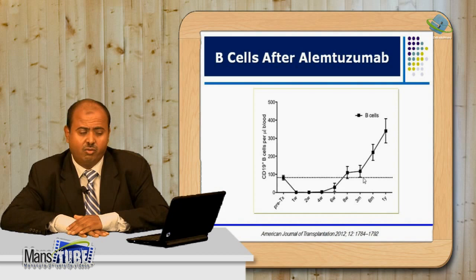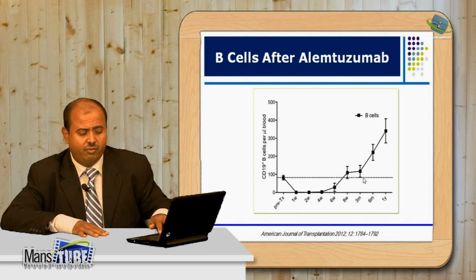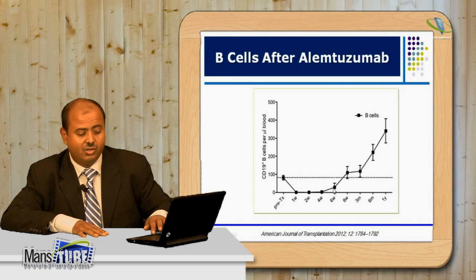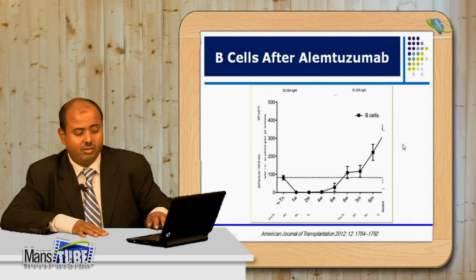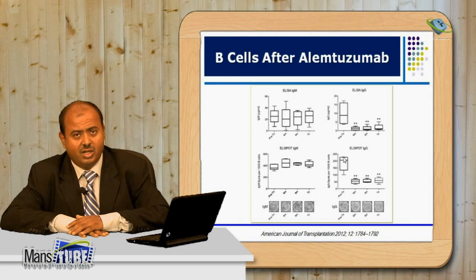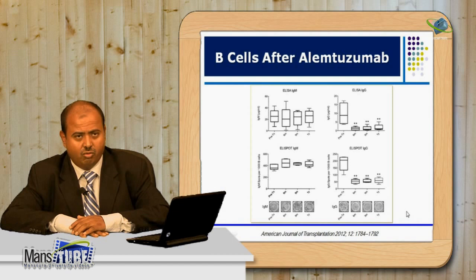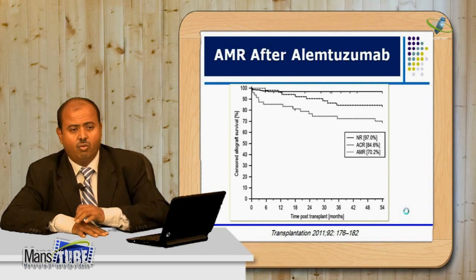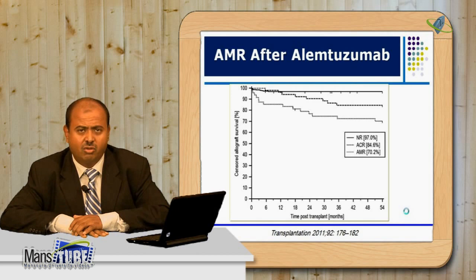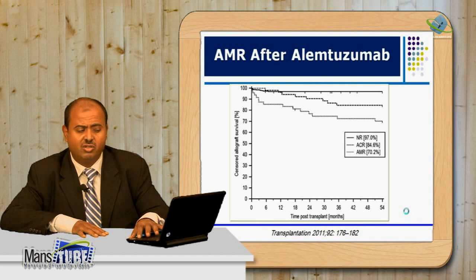Regarding alemtuzumab used as induction therapy: after alemtuzumab induction, B cells are depleted but recover within about six weeks and increase further by one year. However, although cell numbers recover, function is not fully retained — IgM is retained but IgG remains suppressed after reconstitution. Importantly, patients induced with alemtuzumab should be serially monitored for DSA, as they may develop donor-specific antibody leading to AMR and graft loss.